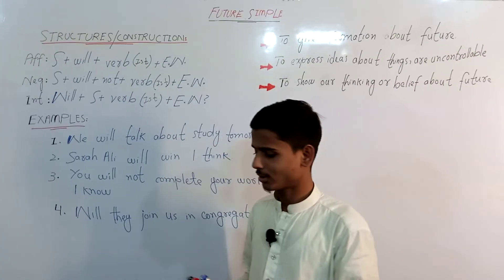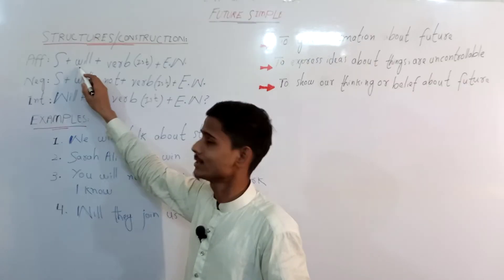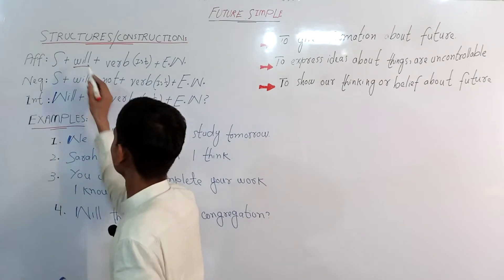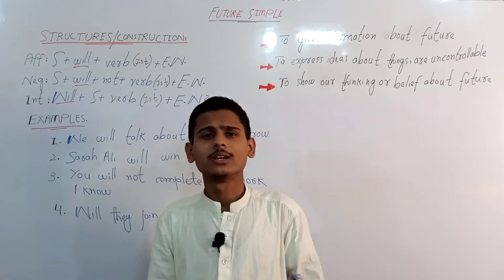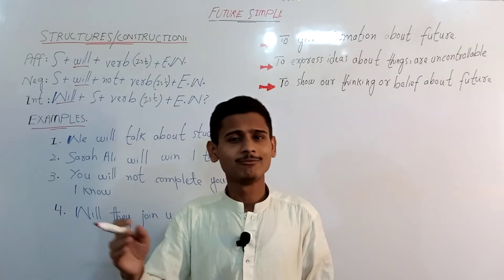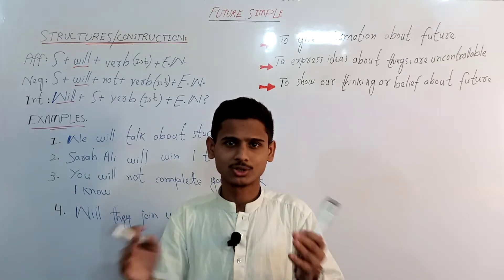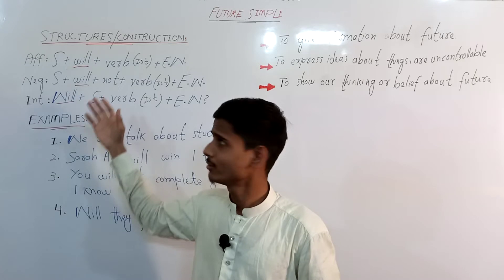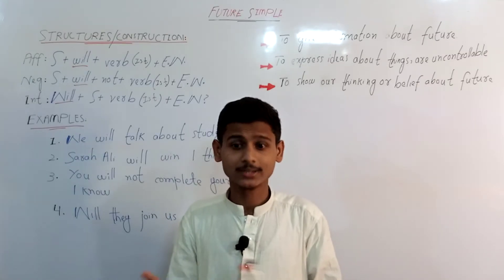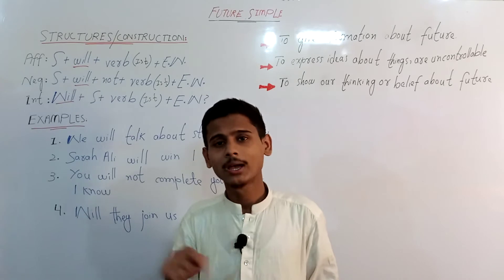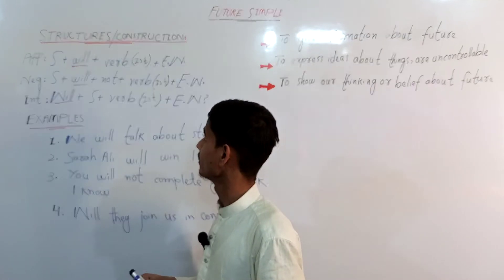Let's start by analyzing the structures written on the board. In the affirmative, we put the subject first, then plus 'will'. Keep in mind that 'will' is a modal auxiliary verb, or helping verb. There are a few ways to talk about the future — using 'will' or 'shall' is one of them. We also use 'be going to' and 'be about to'. For simple future, we have chosen 'will', though we can also use 'shall', which makes little difference, especially in British English.